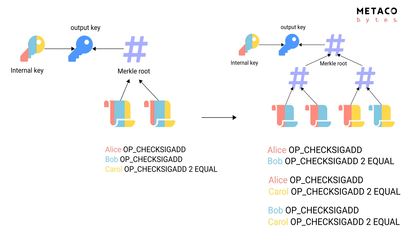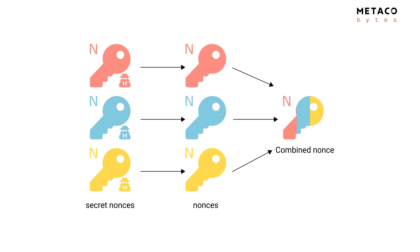Now imagine you want to use MuSig. The way of signing is a bit different. First, each participant needs to create what we call a nonce — in this slide you can see a small 'n' next to each logo, meaning it's a nonce, nothing to do with their private key. It's a one-time-use private key used only for the signing session. It's very important that this nonce is not reused, because otherwise there are attacks that can be used to retrieve the private keys. Each participant generates secret nonces, derives public nonces from them, shares those public nonces, and combines them all into a combined nonce.